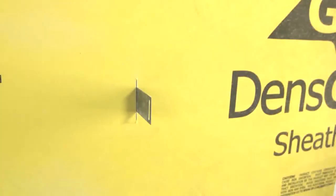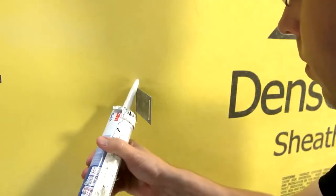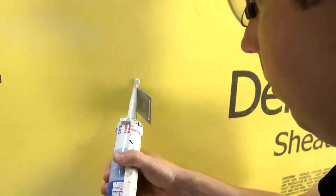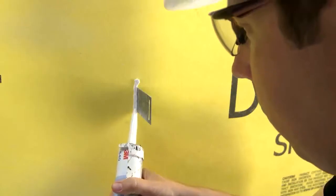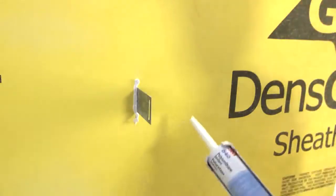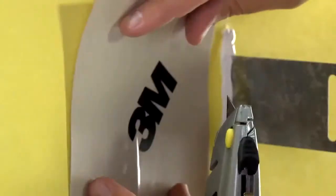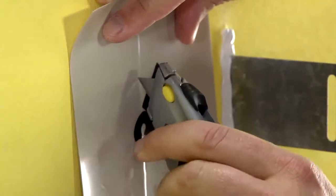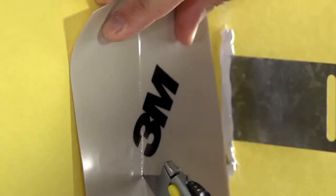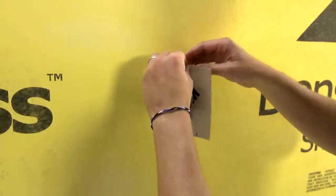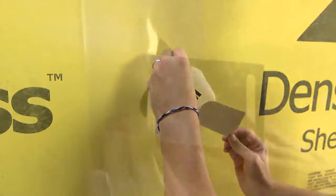To apply 3M Self-Adhered Air and Vapor Barrier Membrane 3015 around a masonry tie knife plate, first fill the gap between the knife plate and wall with 3M Polyurethane Sealant 540. Cut a square of membrane that extends beyond the plate by at least 2 inches in all directions. Cut a slit in the center of the membrane that approximates the height of the plate. Slide the membrane slit over the plate and burnish the membrane firmly to the wall.